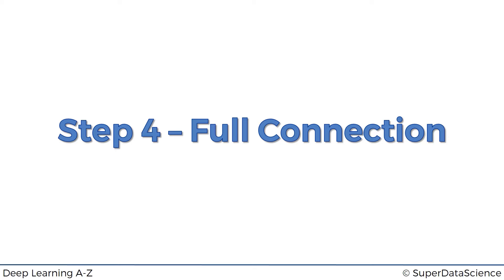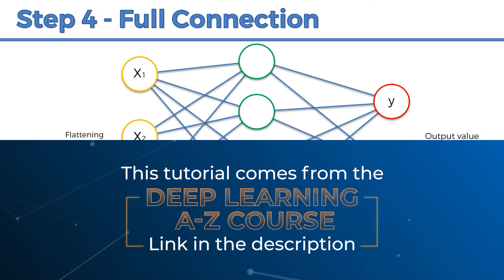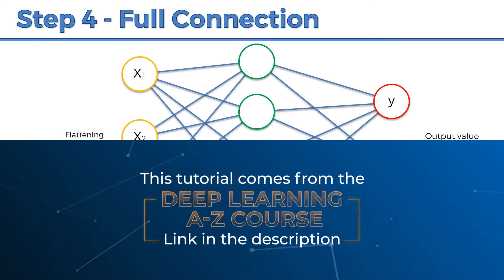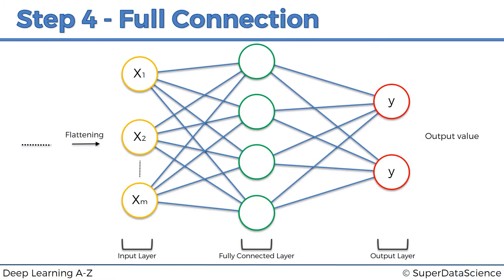Hello and welcome back to the course on deep learning. Today we're finally at step number four: full connection. In this step we're adding a whole artificial neural network to our convolutional neural network. So to all of the things we've done so far — convolution, pooling, and flattening — now we're adding a whole new ANN on the back of that.